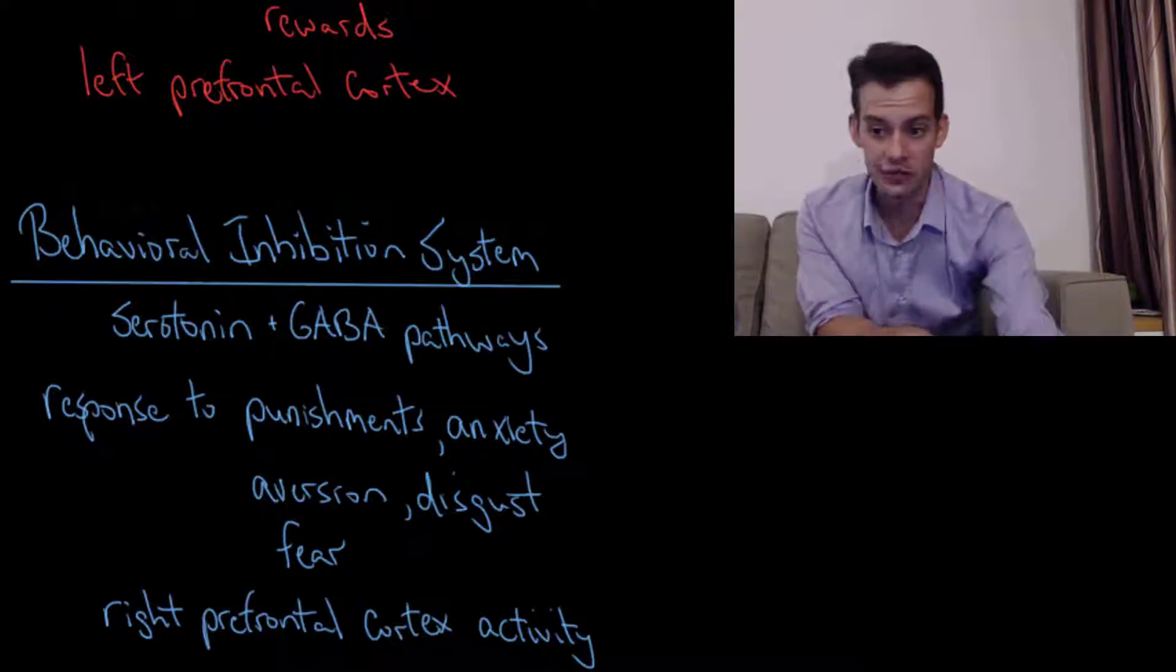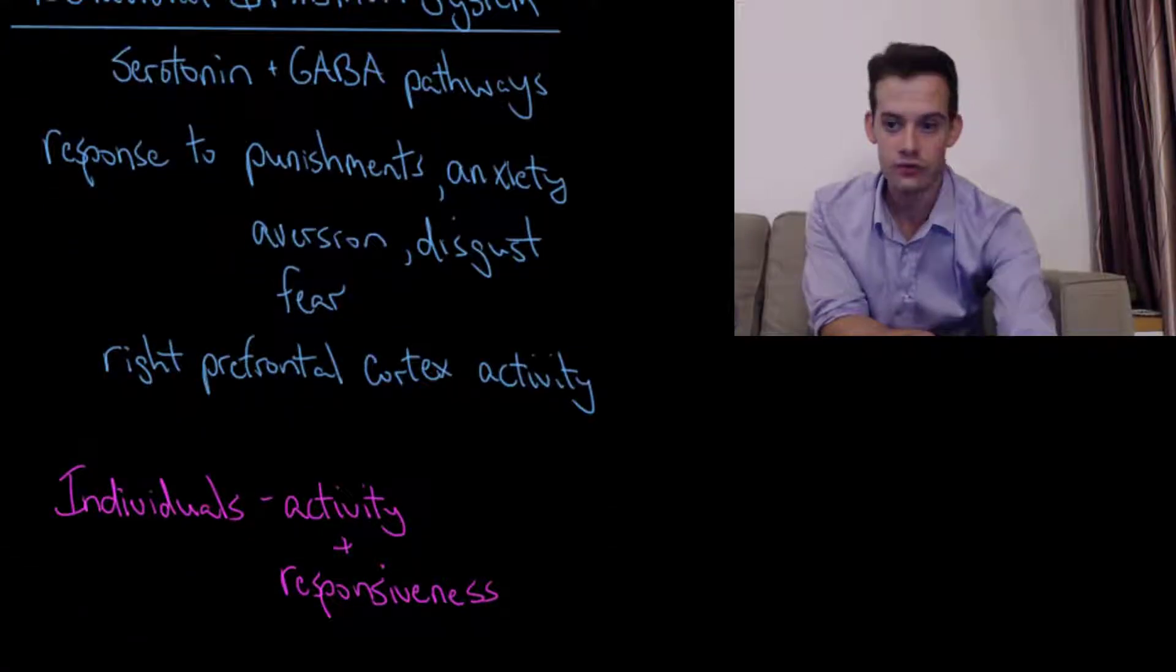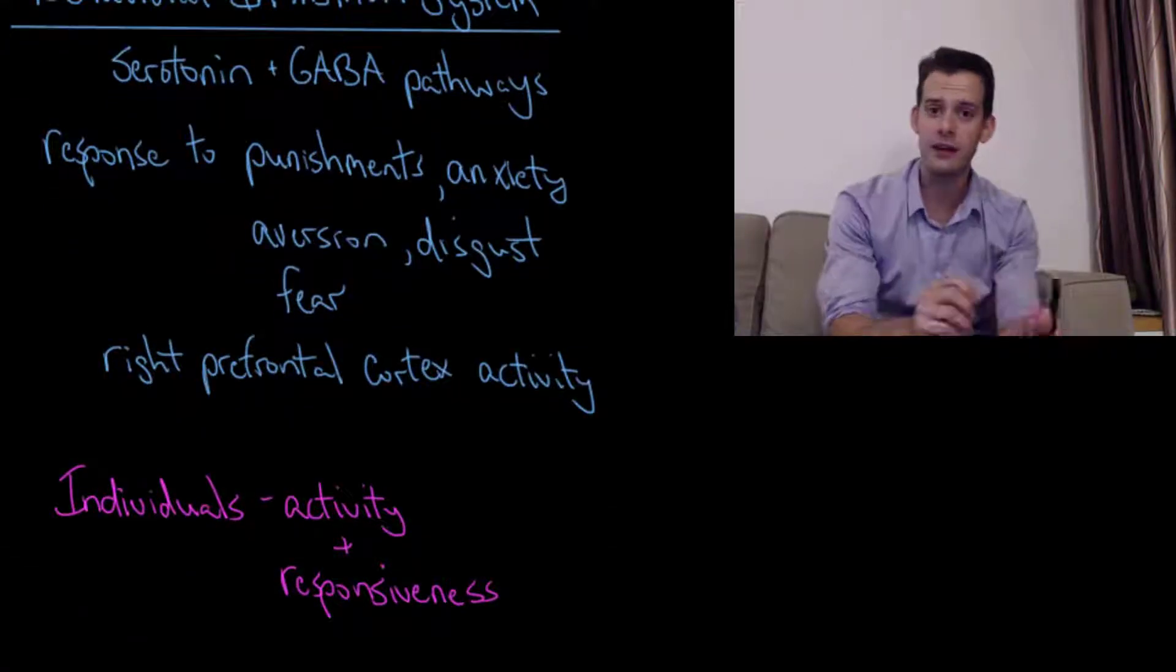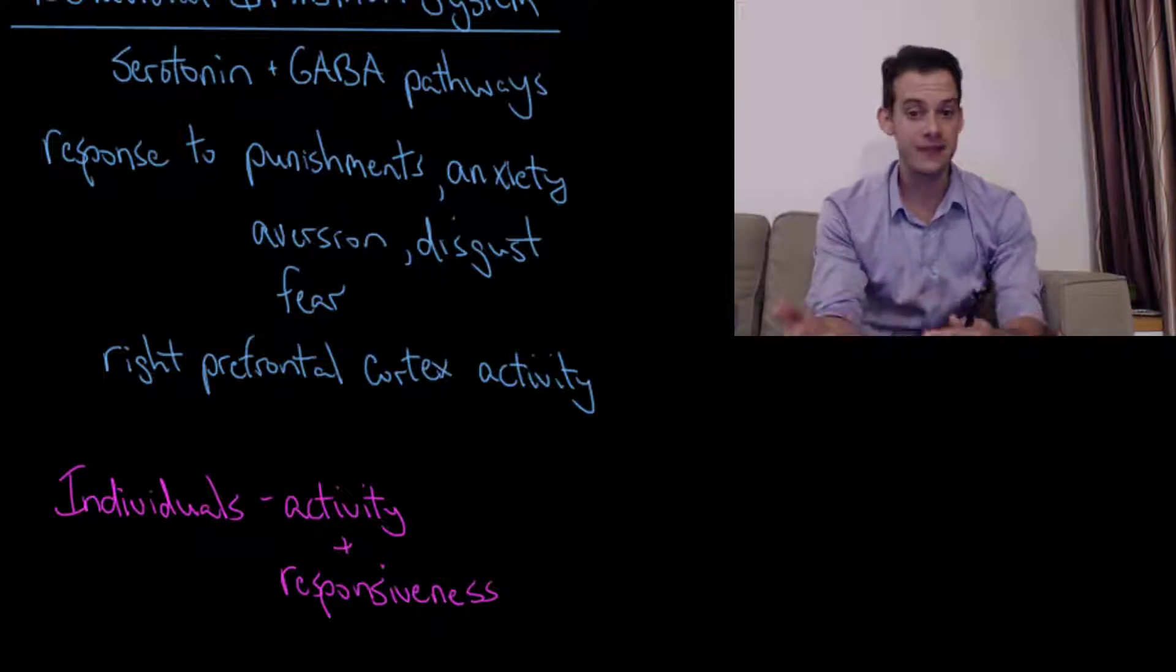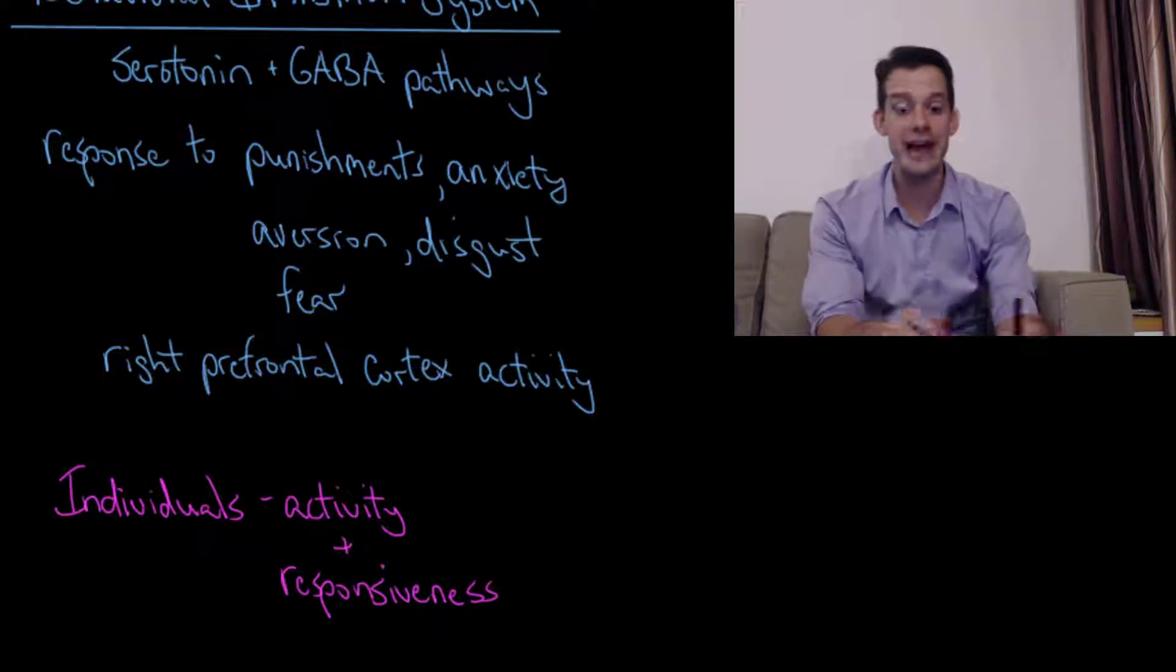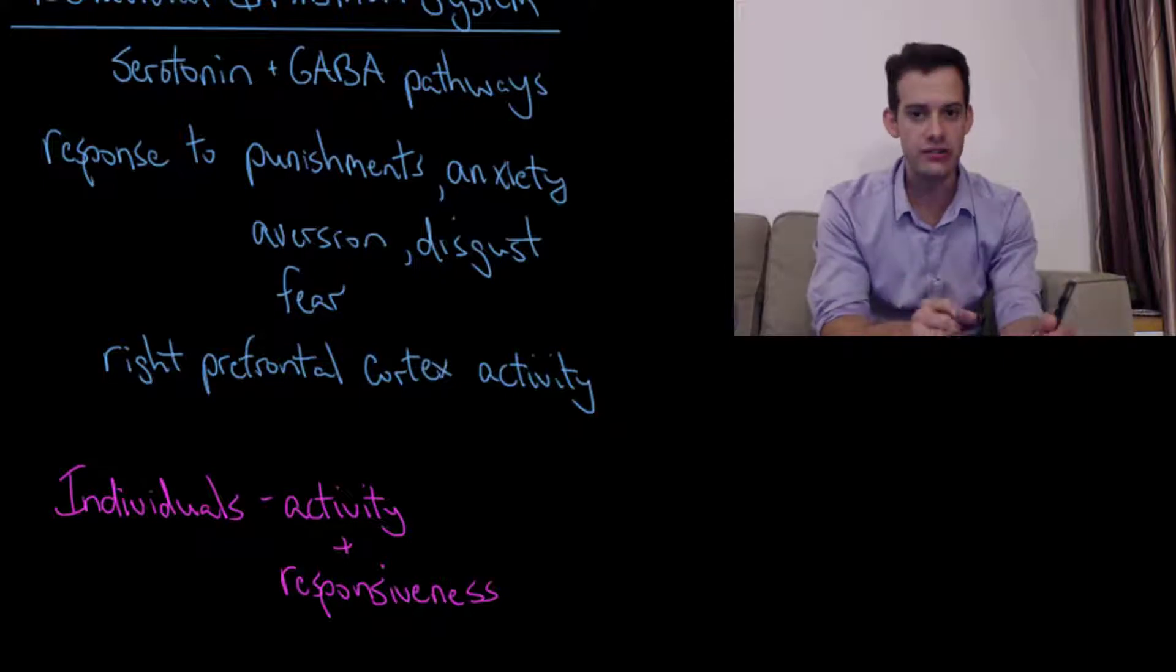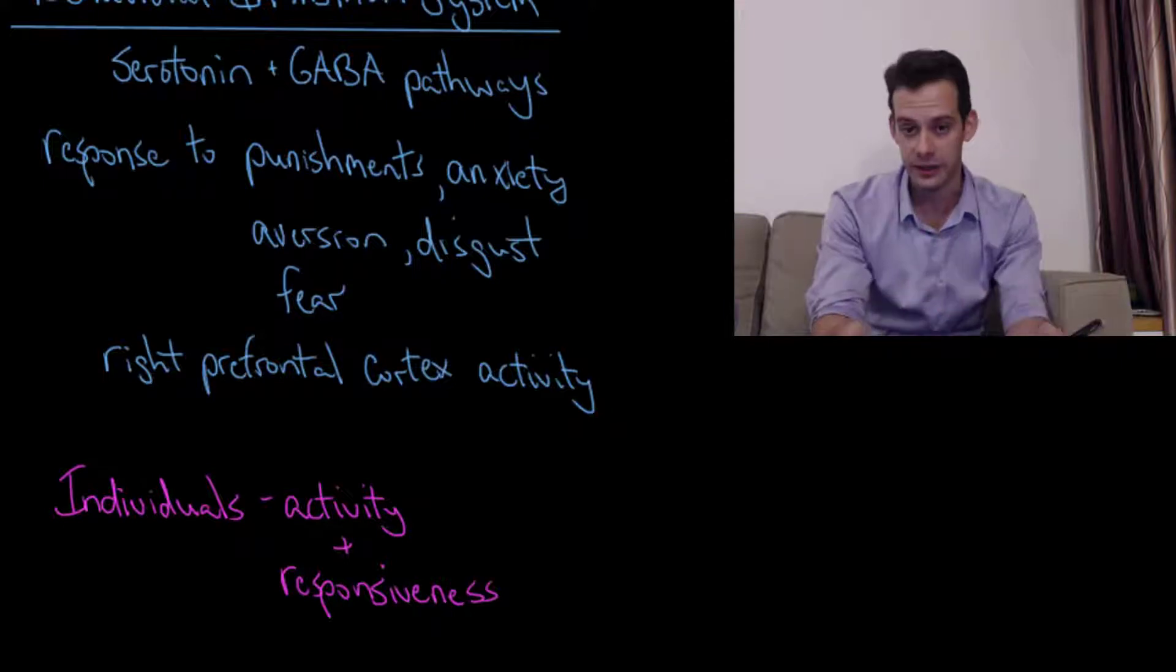So to bring this back to personality differences, we might think about the ways that individuals can differ in terms of the activity of these two systems and the responsiveness. So by that I mean a certain situation might provoke a greater response in somebody's inhibition system and that's going to influence their behavior. And another person might have a different response to that same situation and so they'll have a different behavior and this will give us sort of the differences that we see in personality.